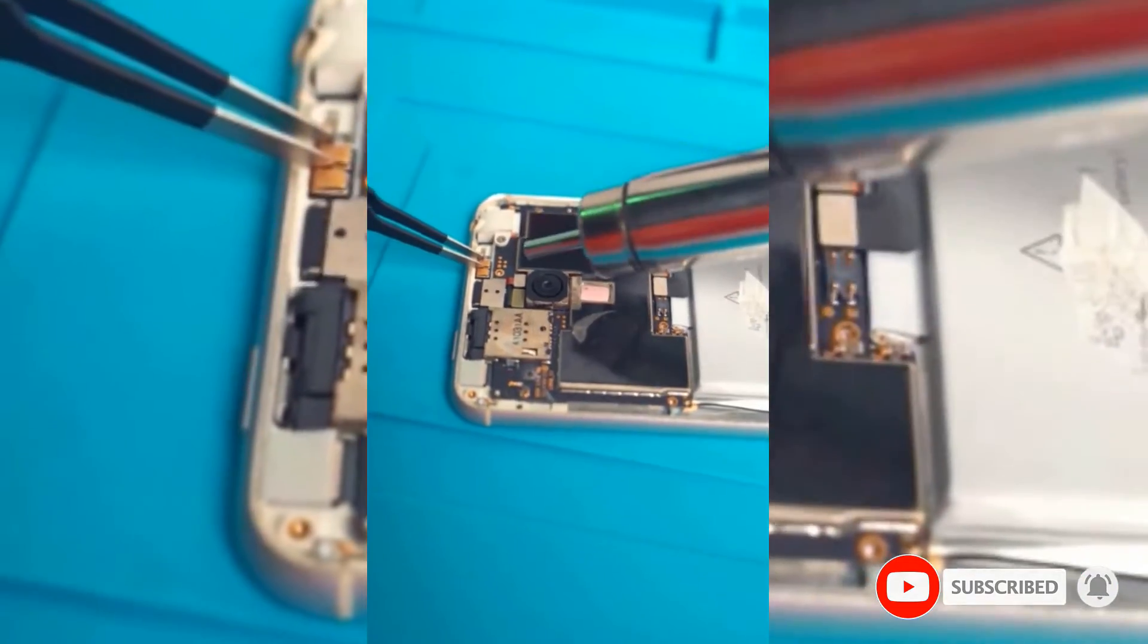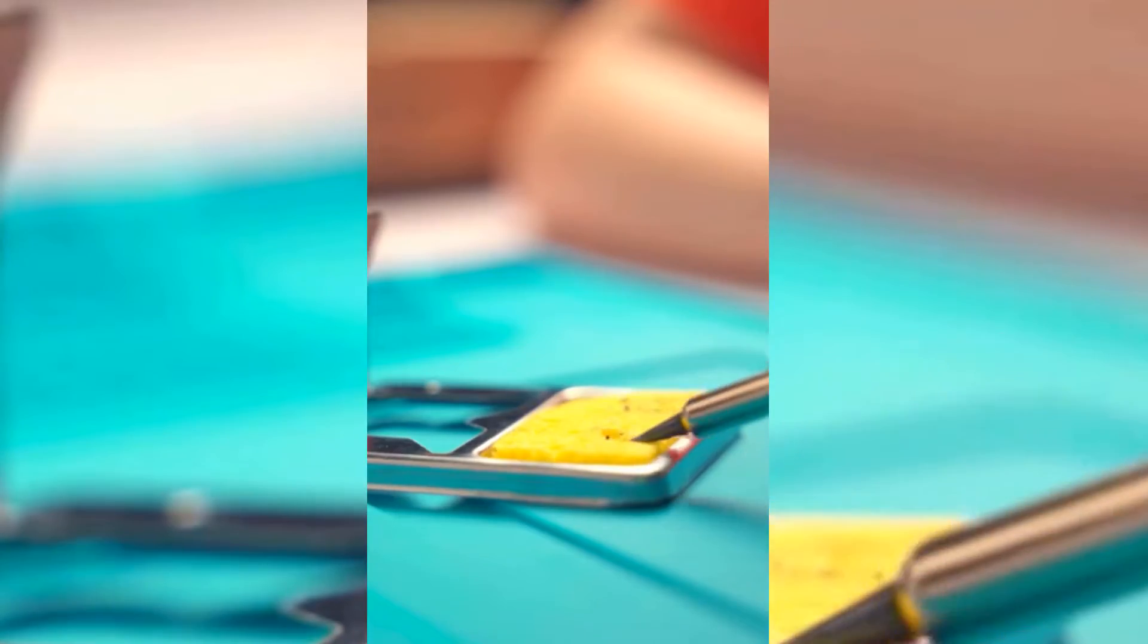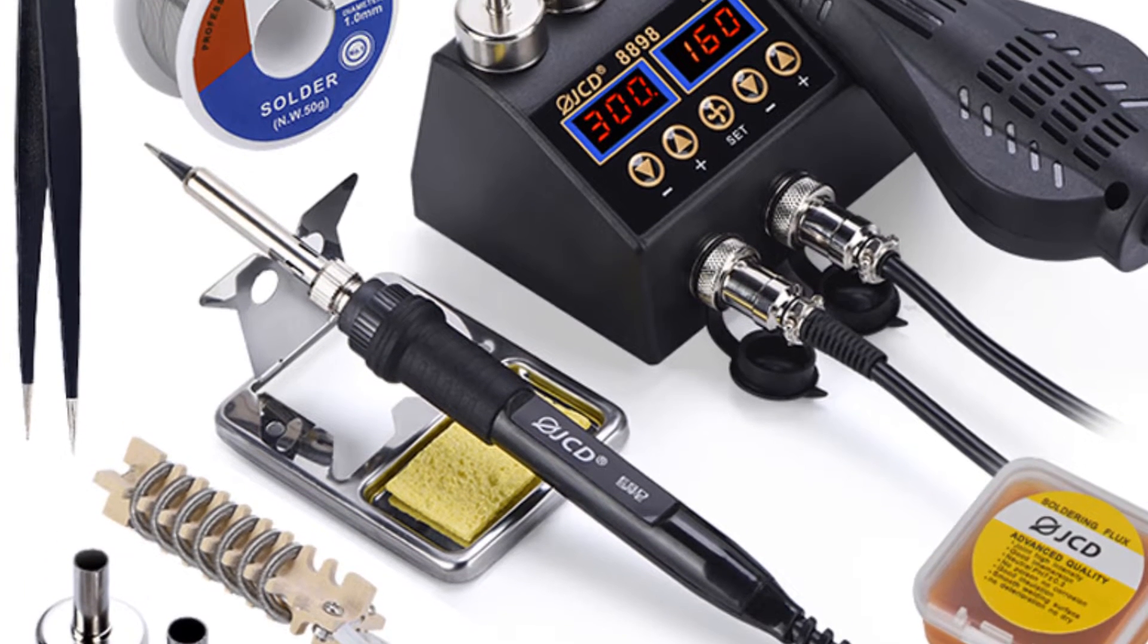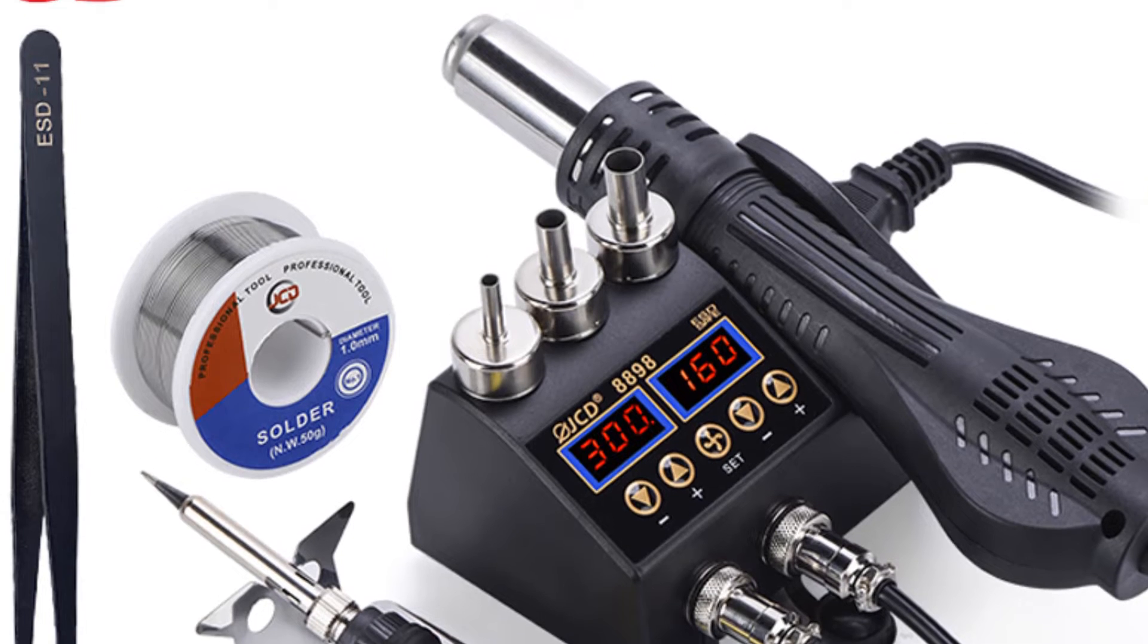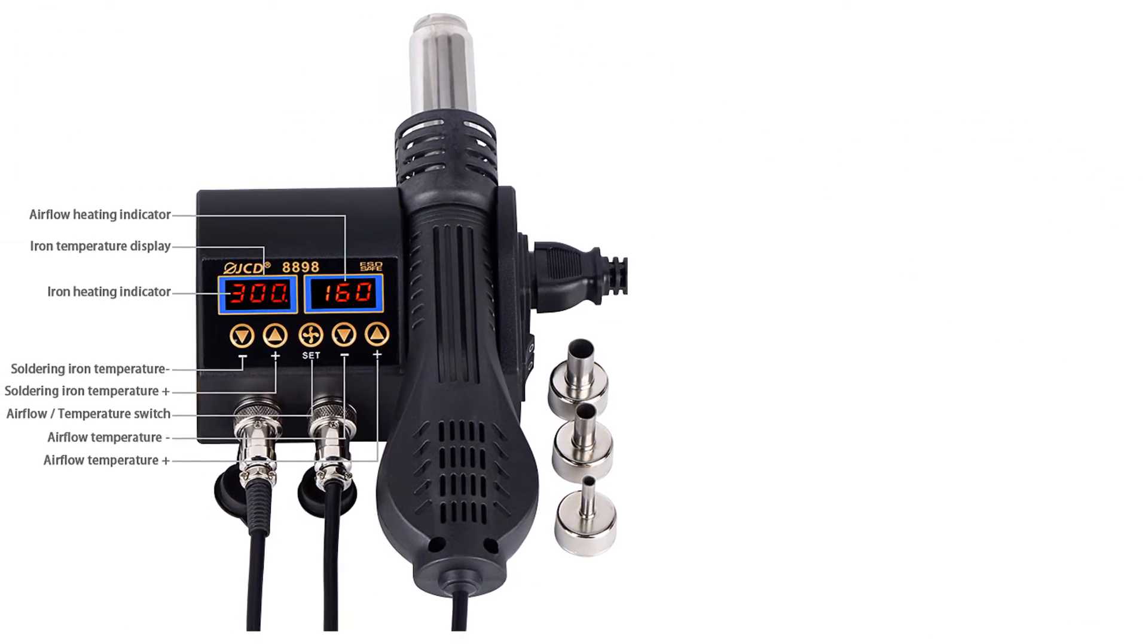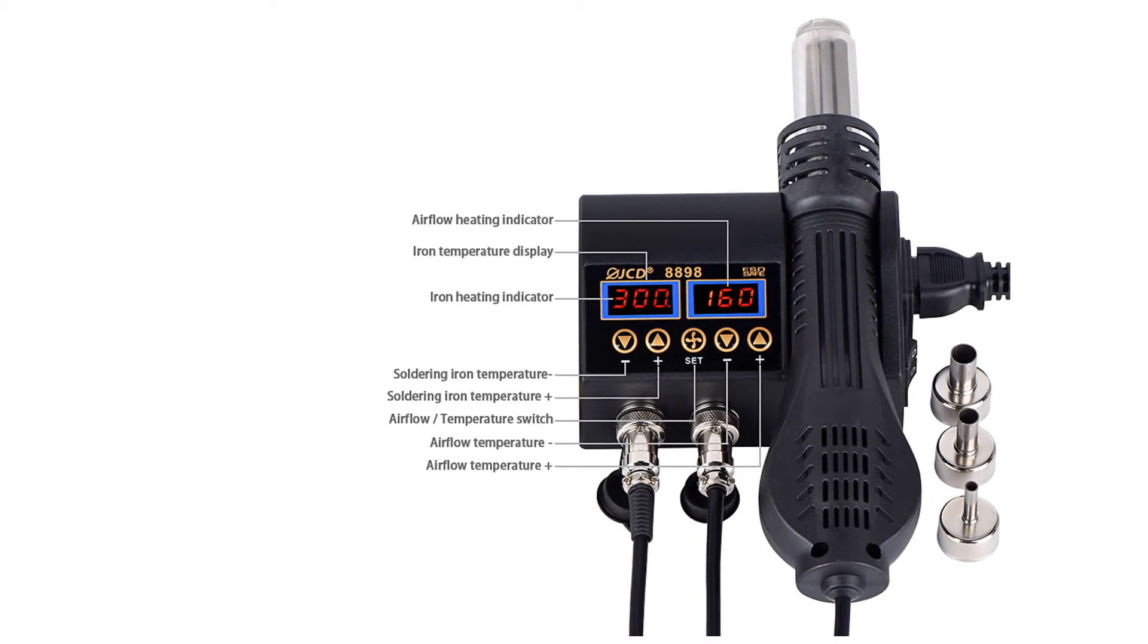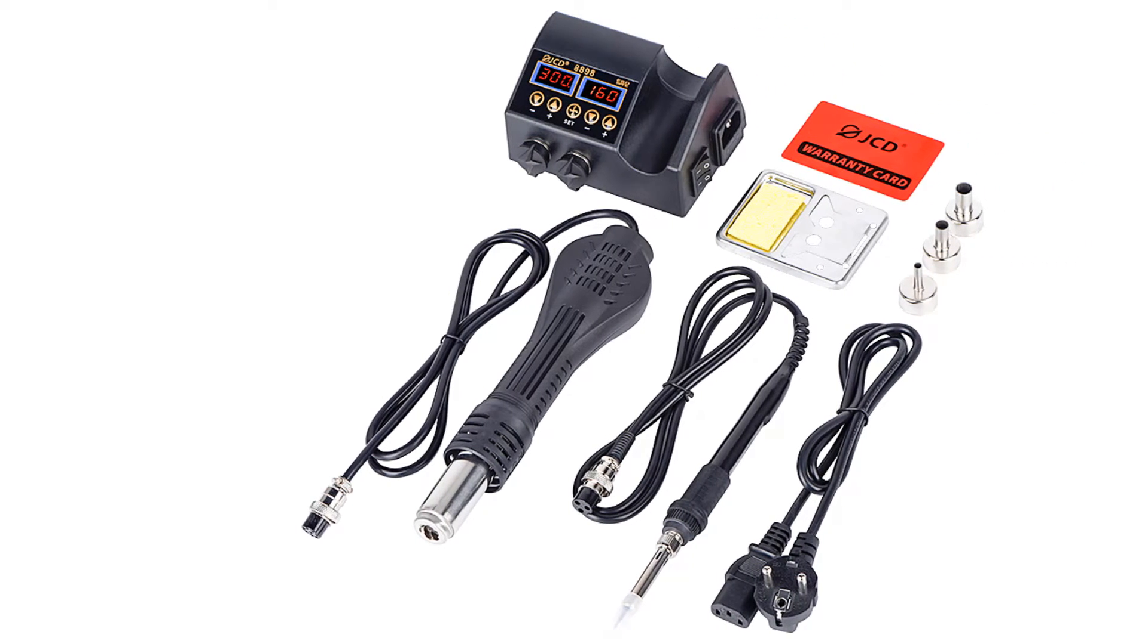This station offers both a soldering pencil and a hot air gun for welding and repair work. With digital LCD dual displays and control buttons, it is easy to adjust the temperature: 180 degrees Celsius to 500 degrees Celsius for soldering iron and 100 degrees Celsius to 500 degrees Celsius for hot air gun.